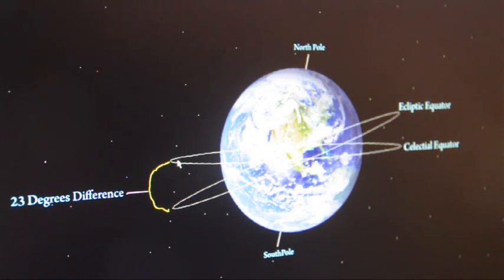You guys taking notes? Good. So this is called the ecliptic equator. Now, you see the difference between the celestial equator and the ecliptic equator is 23 degrees. This is why there's a 23 degree difference between your Vedic astrology planets and signs and your Western astrology planets and signs.